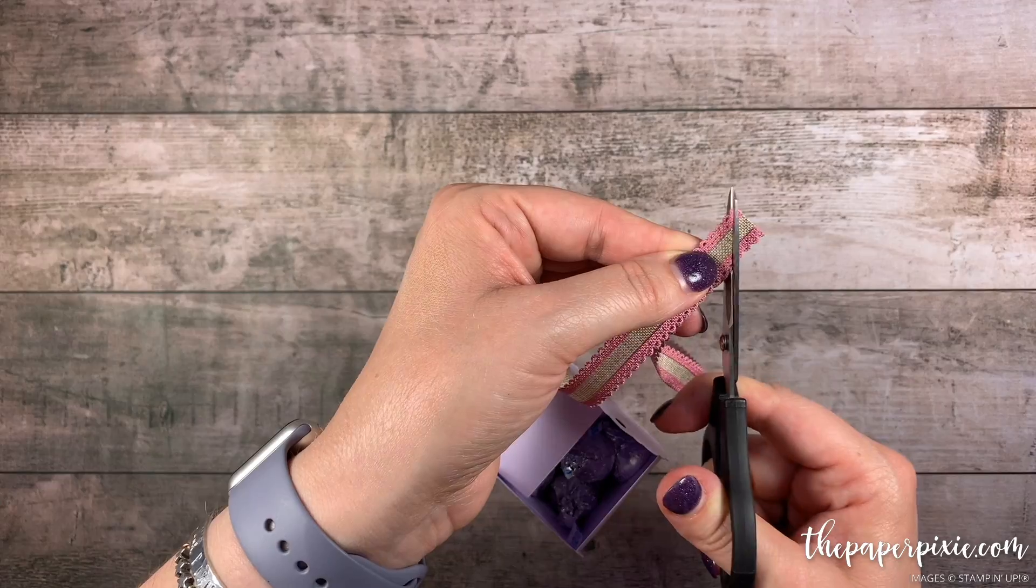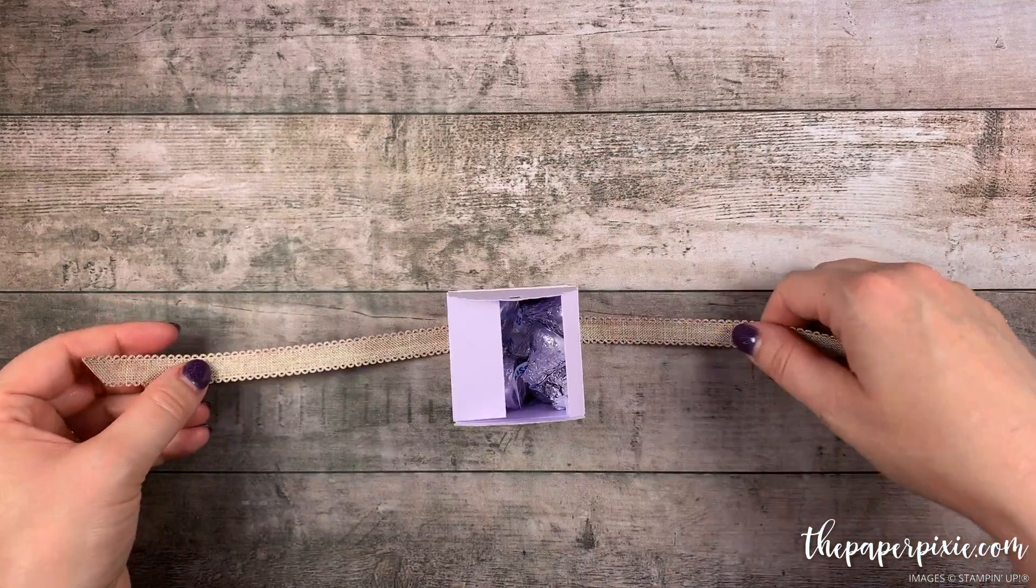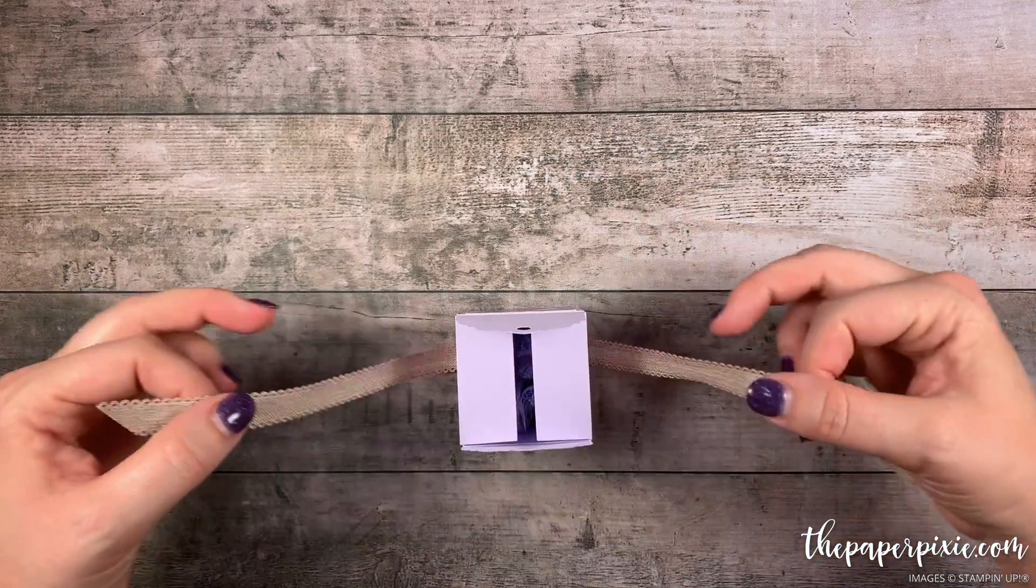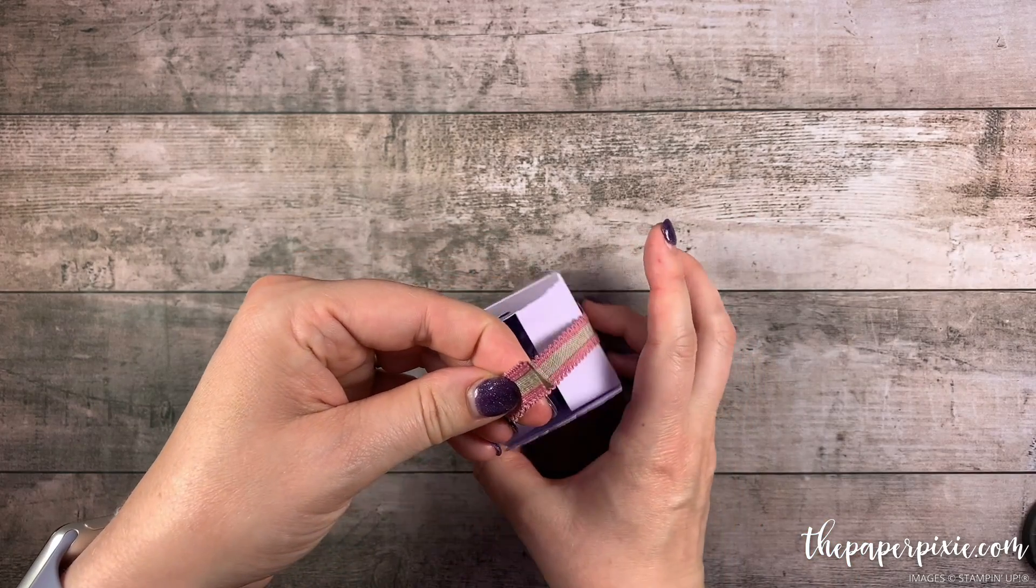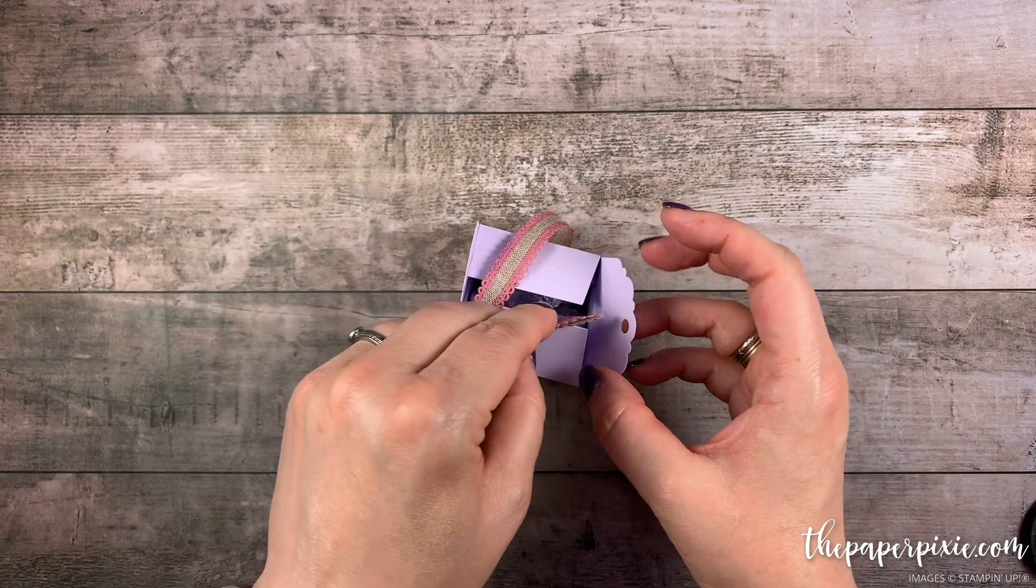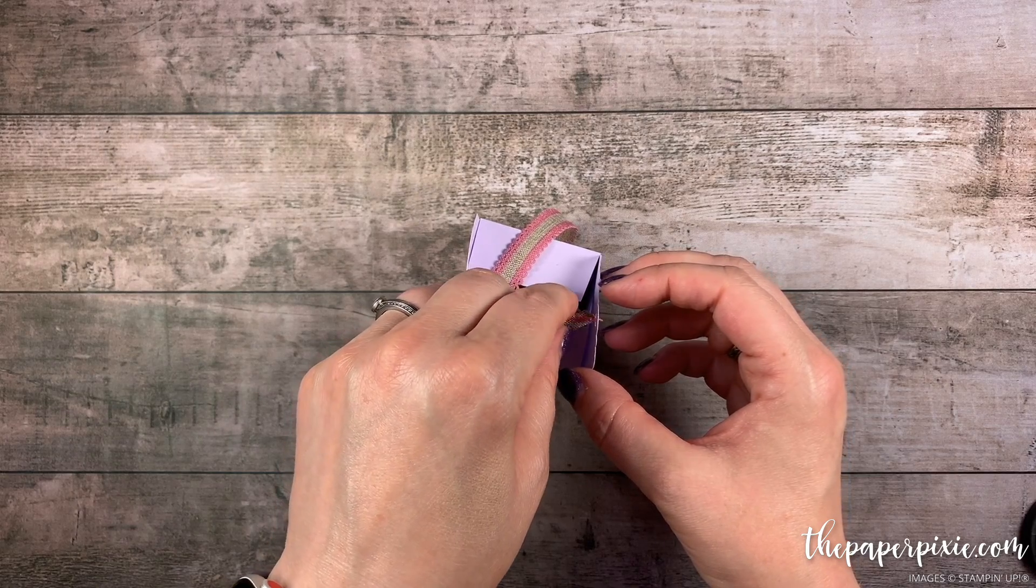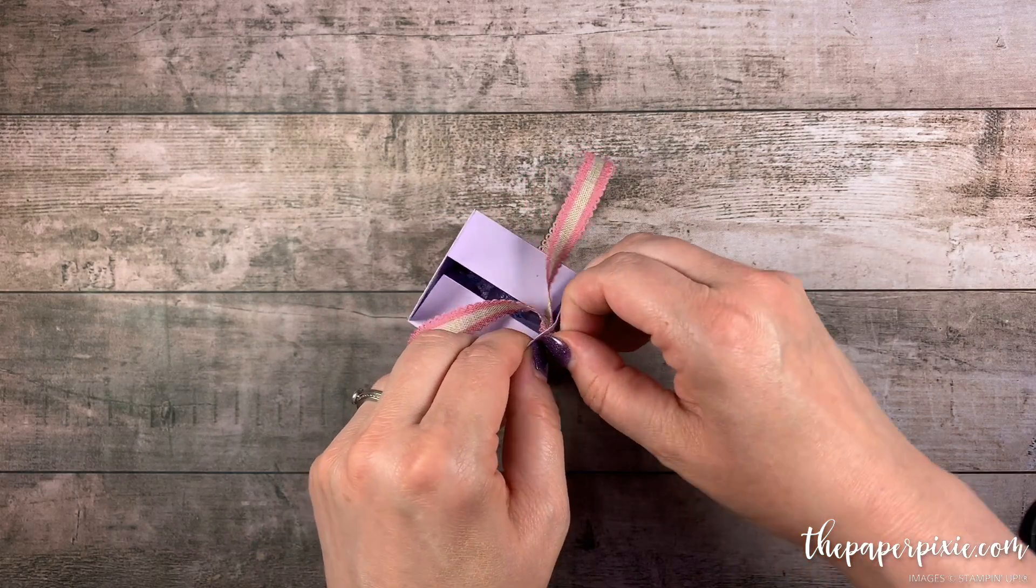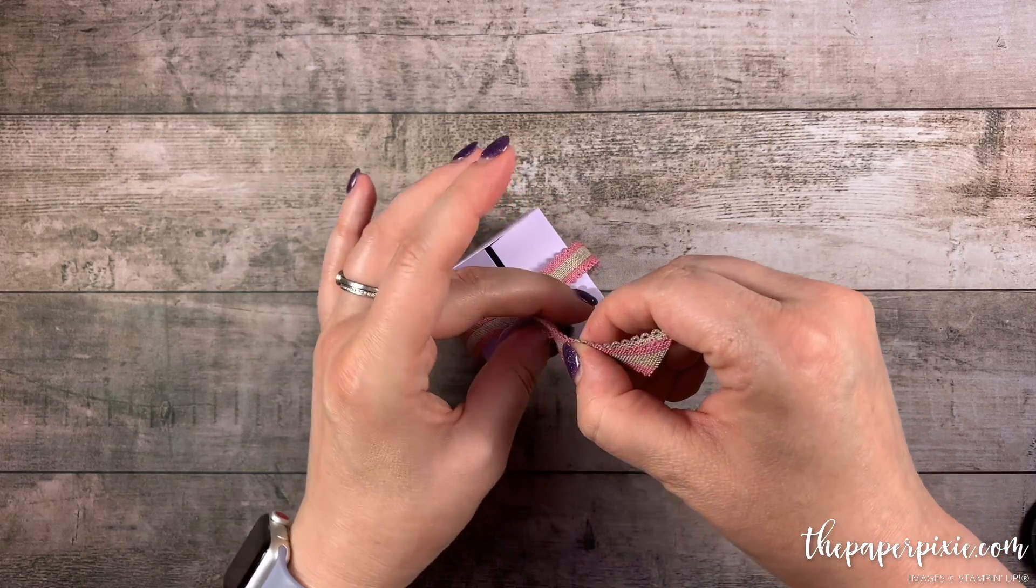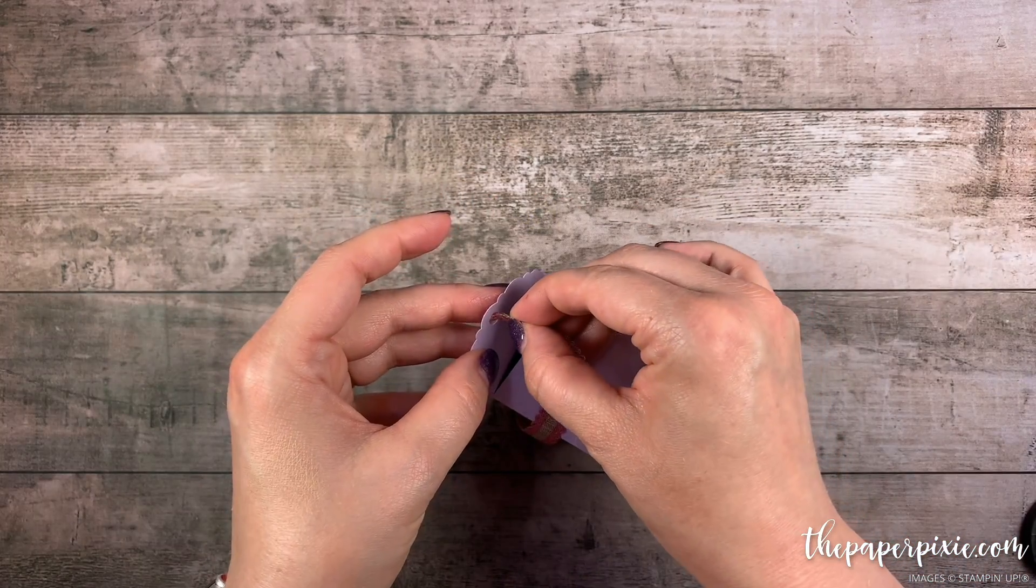I'm just going to cut the ends here at an angle. And then again wrap it around the box. Pinch those two ends together. And then we're going to feed it through each of the tag topper sides at one at a time. So pull it through one. Feed it through the other.